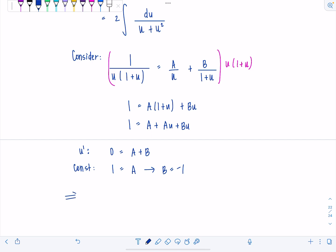And then back to our integral at hand. Remember, we have a 2 sitting out front. And then now I have a over u, so 1 over u. B is negative 1, so I'm going to write minus 1 over 1 plus u du.